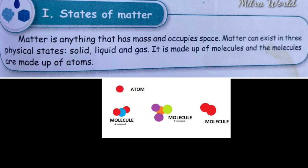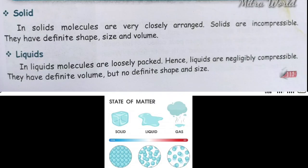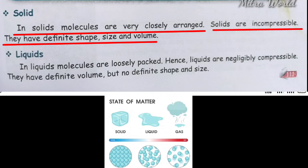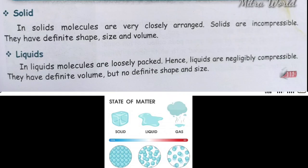The first state of matter is solid. In solids, molecules are very closely arranged. Solids are incompressible. They have a defined shape, size, and volume.